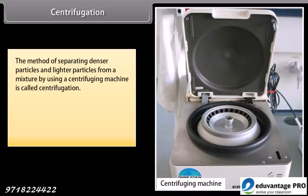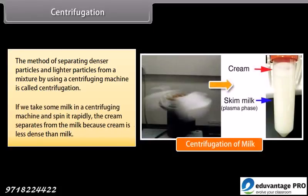Centrifugation: The method of separating denser particles and lighter particles from a mixture using a centrifuging machine is called centrifugation. For example, if we take some milk in a centrifuging machine and spin it rapidly, the cream separates from the milk because cream is less dense than milk.